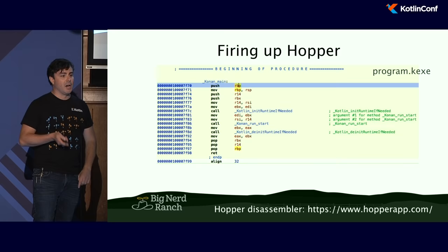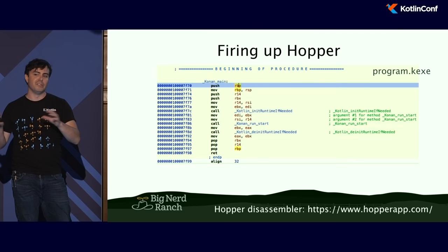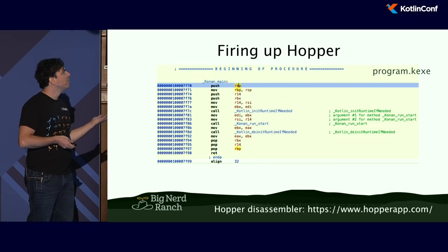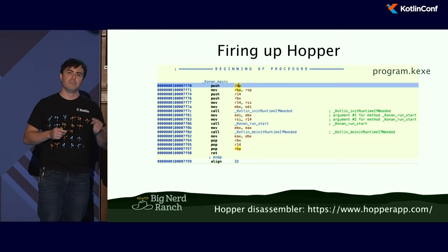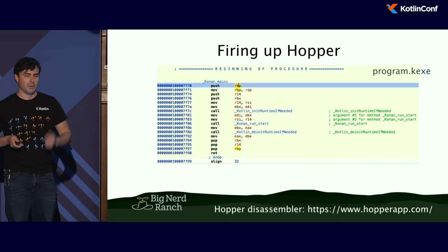They have a pseudocode mode in Hopper that will actually take the assembly and try to map it to C. That's another way I know the tools exist for this to work with CLion — there should be a disassembler built in that gives me a view of the assembly as I compile the program. Incremental compilation would need to be implemented first, but I think they're working on that.